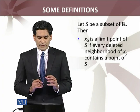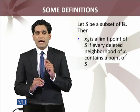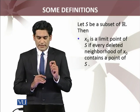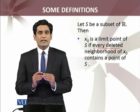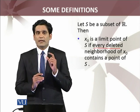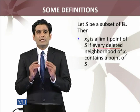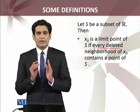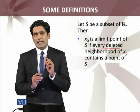Let S be a subset of the real numbers. X₀ is a limit point of the set S if every deleted epsilon-neighborhood of X₀ contains a point of S. The word 'every' is very important here — there are infinitely many possible deleted neighborhoods for a given point X₀. Deleted neighborhood का मतलब है कि X₀ को उस epsilon-neighborhood से निकाल दें, उसको deleted neighborhood कहते हैं, और उसमें set S के कुछ points होने चाहिए।